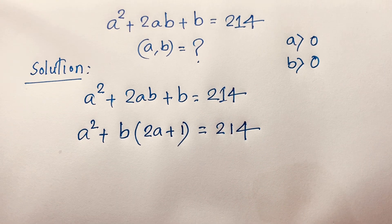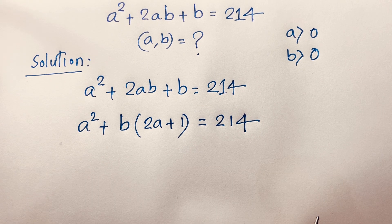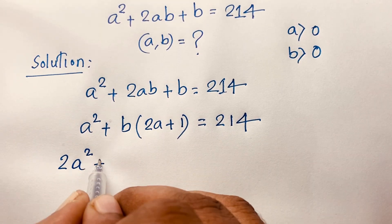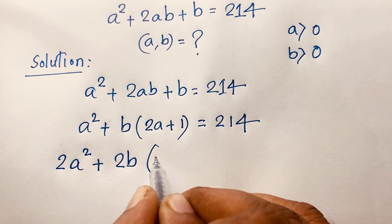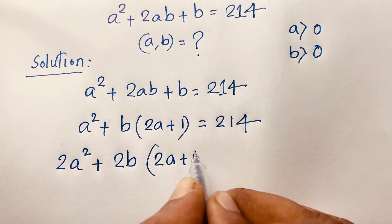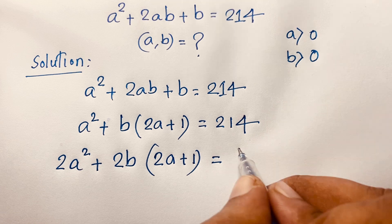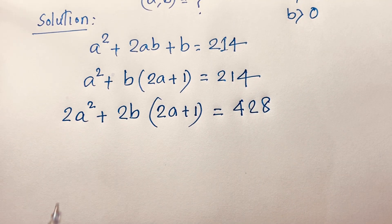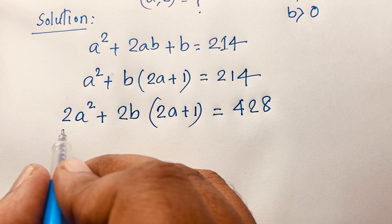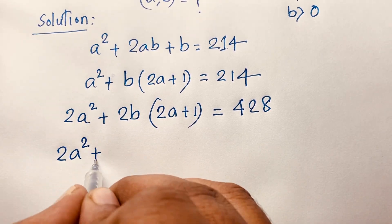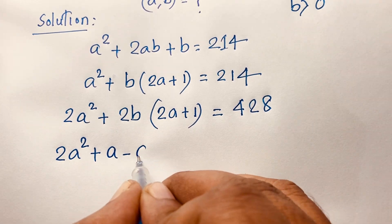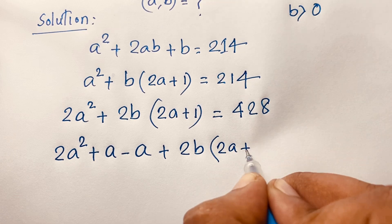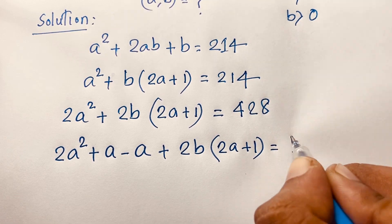Now I multiply both sides by 2. If I multiply this value by 2, it will be 2a squared, and if I multiply this value by 2, it will be 2b times 2a plus 1, and if I multiply this value by 2, it will be 428. Now you can see here is 2a squared, and I add here is a, then I subtract this a, and here is plus 2b times 2a plus 1, is equal to 428.